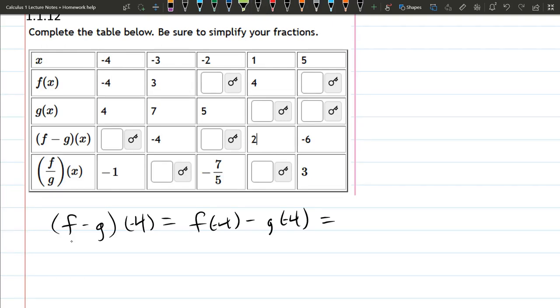Alright, so what is f of negative 4? You see that right here, f of negative 4 is negative 4 itself, that's f of negative 4, minus g of negative 4, so here's the g of negative 4, it's right there, it's positive negative 4. Negative 4 minus 4 is negative 8, and that negative 8 goes right there. That takes care of the first, now we're going to go to the second column.